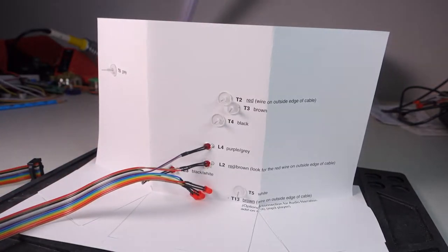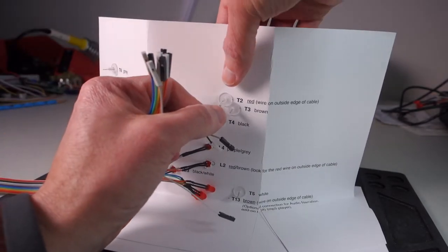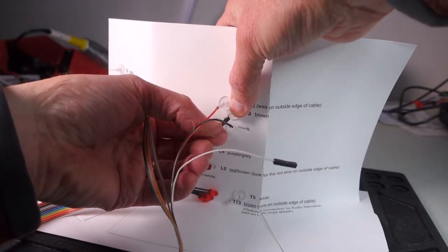Once you have those in, you can go ahead and do the touch point wires. Starting with T2, which is the red wire, T3 is brown, etc.